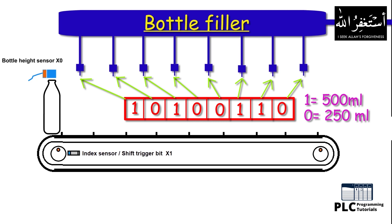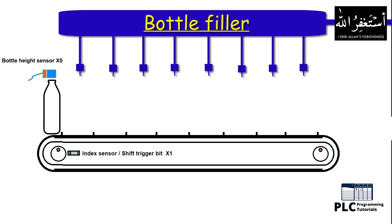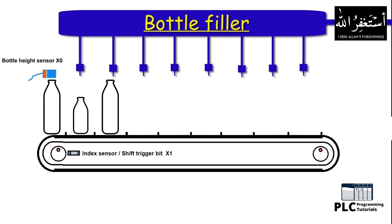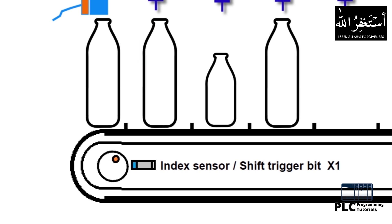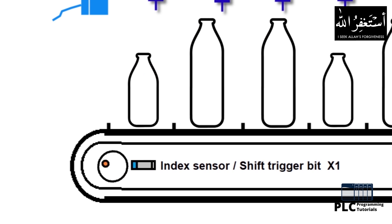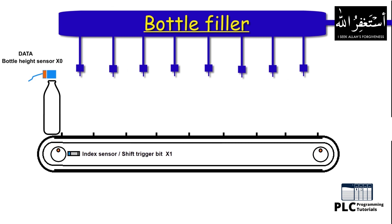Data bit one indicates a 500 ml bottle, and data bit zero indicates a 250 ml bottle under the filling nozzle. Next, we have a bottle height sensor which is either on or off — it turns on and gives a one for a 500 ml bottle, and remains off giving a zero for a 250 ml bottle. We also have an index sensor on the conveyor which is activated once for every rotation of the gear, indicating the conveyor belt has moved one step forward. We can use this sensor signal as a trigger to shift the data bits across the shift register. Let's see the complete animation and understand how the whole concept works.